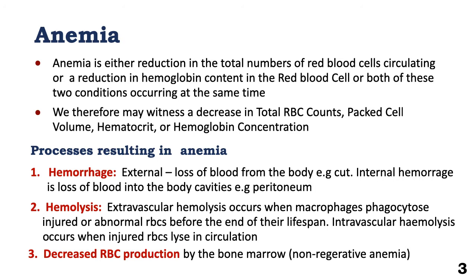Let's start with anemia. Anemia is defined as either the reduction in total red blood cells circulating in blood, or a reduction in hemoglobin content of the red blood cells, or both of these two conditions occurring at the same time.